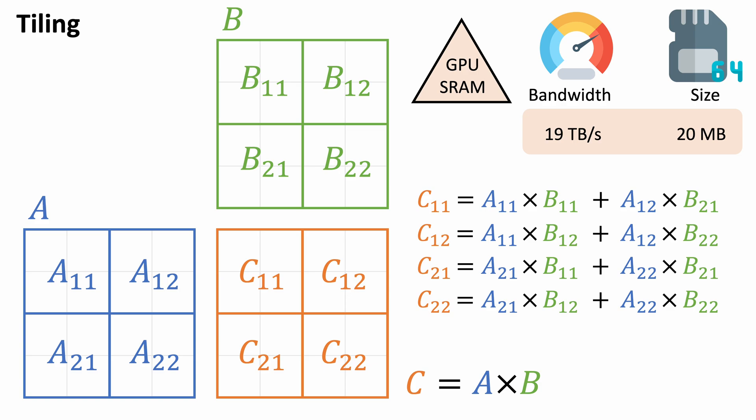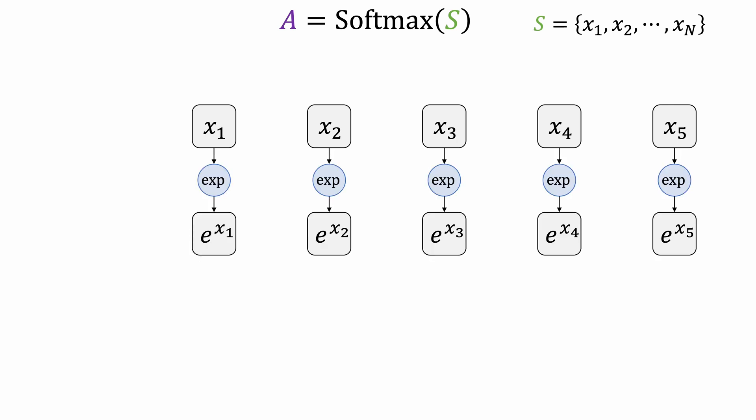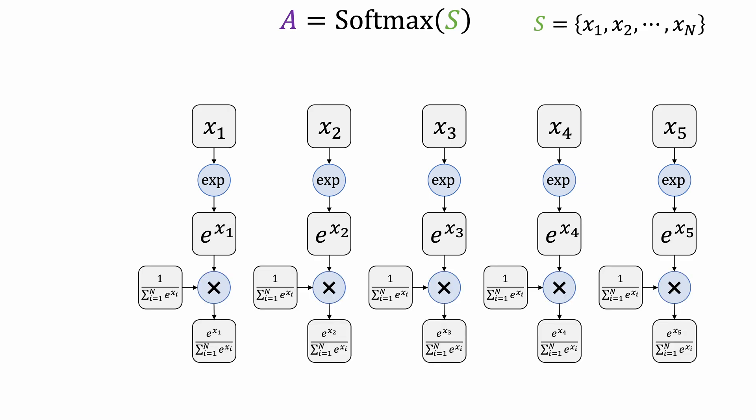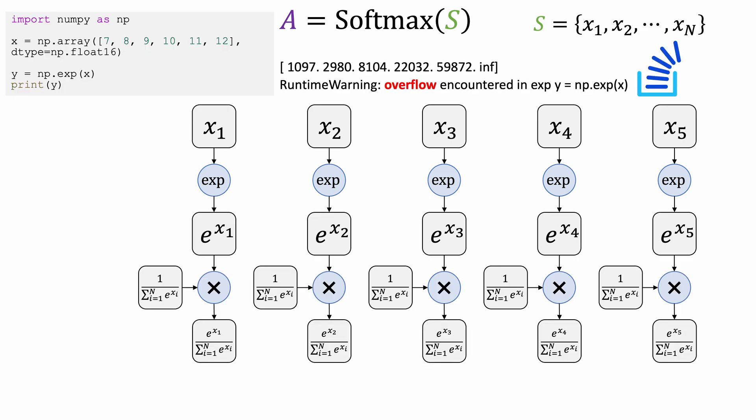Now how can we apply the tiling technique to speed up attention? We already know how to apply tiling to perform matrix multiplications, but we still have this softmax operation in between. Let's focus on this and see how we can break down the computation using tiling. For simplicity, we only consider one row of the attention matrix at a time. This gives us a sequence of N numbers x1 to xN. To compute softmax, we first apply an exponential to make all the numbers positive, then normalize them to sum up to 1. One new issue with this approach is that it's not numerically stable.